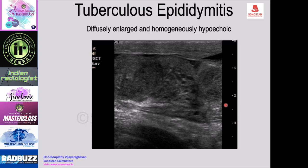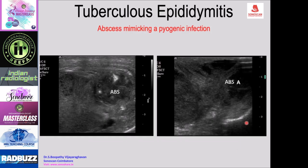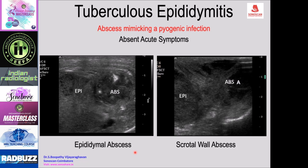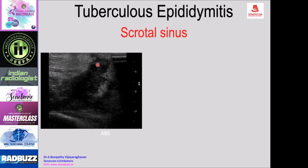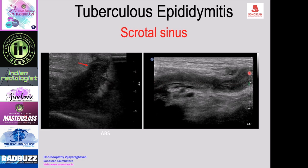The entire epididymis may be enlarged and homogeneously hypoechoic. An abscess may be seen in the tail of the epididymis with a central necrotic area. There may also be a scrotal wall abscess with an enlarged tail of the epididymis. These findings mimic pyogenic infection but the patient may not have acute symptoms. The abscess in the tail can rupture and appear as a scrotal wall abscess, which can then rupture through the skin forming a sinus tract.